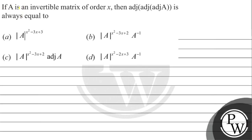If A is an invertible matrix of order x, then adjoint of A is always equal to the determinant of A to the power x squared minus 3x plus 3. Option: determinant of A to the power x squared minus x plus 2 into the inverse, or determinant of A to the power x squared minus 3x plus 2 into A inverse.